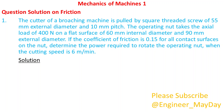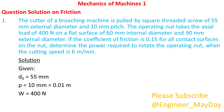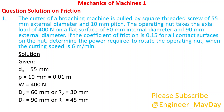Solution. Given: D0 equals 55 millimeters, P equals 0.01 meters, W equals 400 newtons, D2 equals 60 millimeters (R2 equals 30 millimeters), D1 equals 90 millimeters (R1 equals 45 millimeters), and mu equals 0.15.